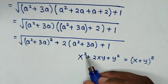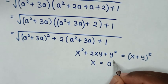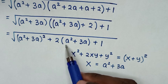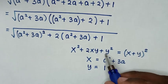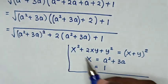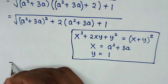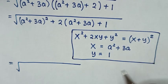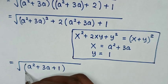When we compare, x squared corresponds to (a squared plus 3a) squared, so x equals a squared plus 3a. And y squared corresponds to 1, which is 1 squared, so y equals 1. Therefore, it becomes square root of (a squared plus 3a plus 1) squared.